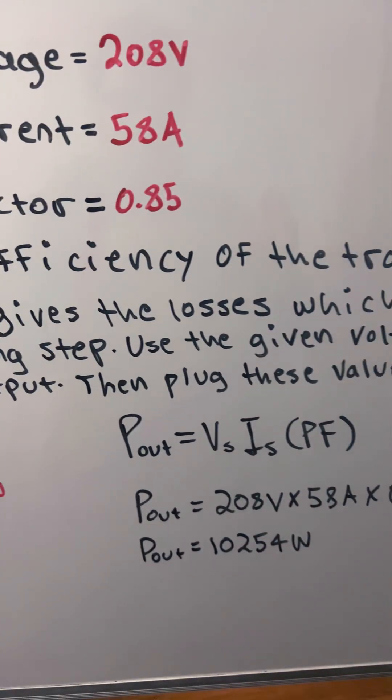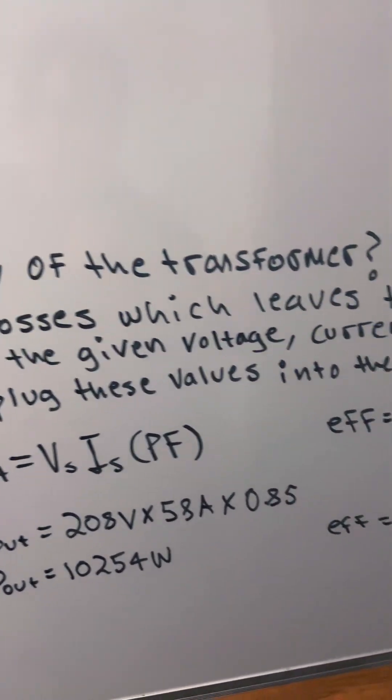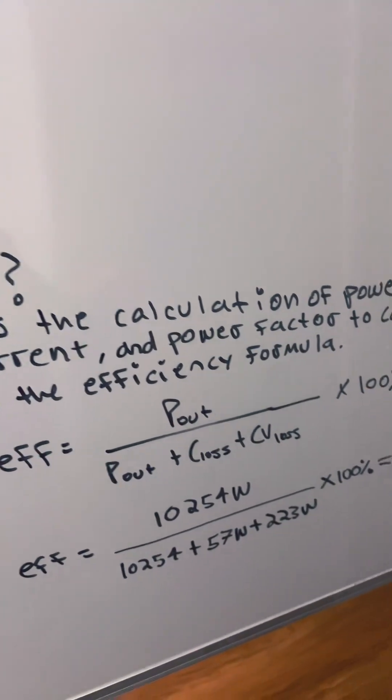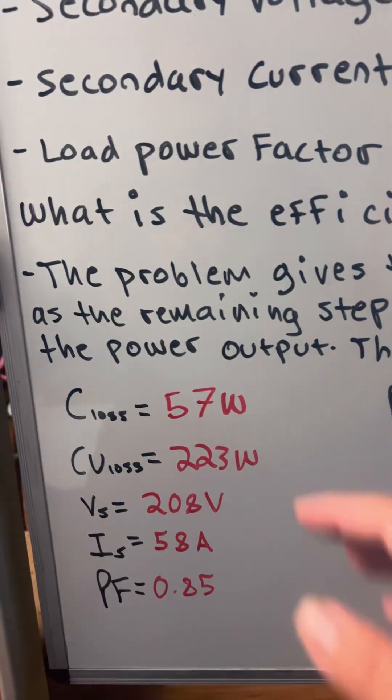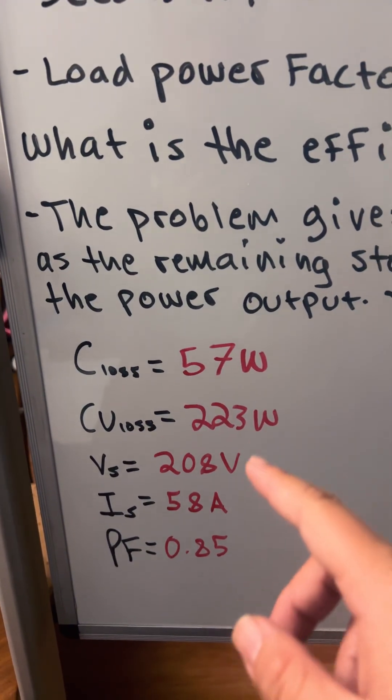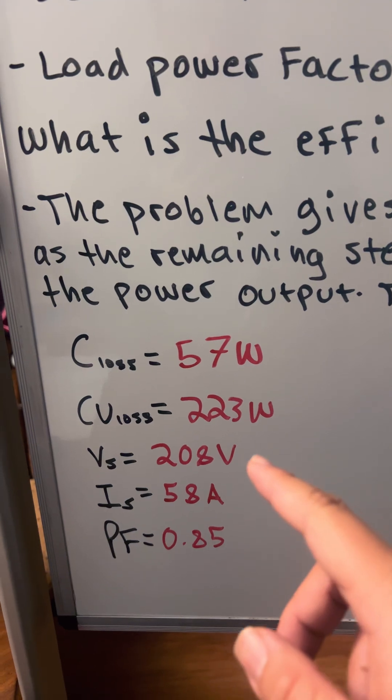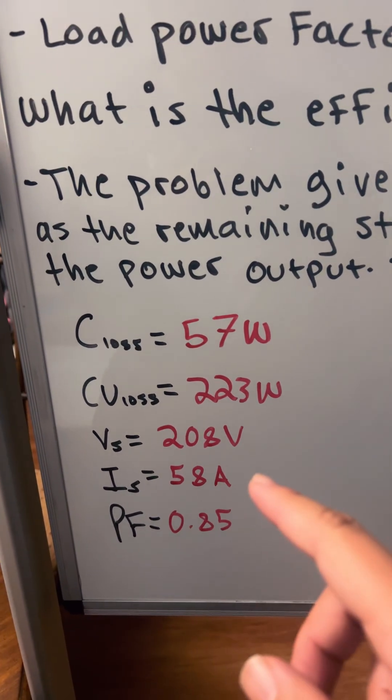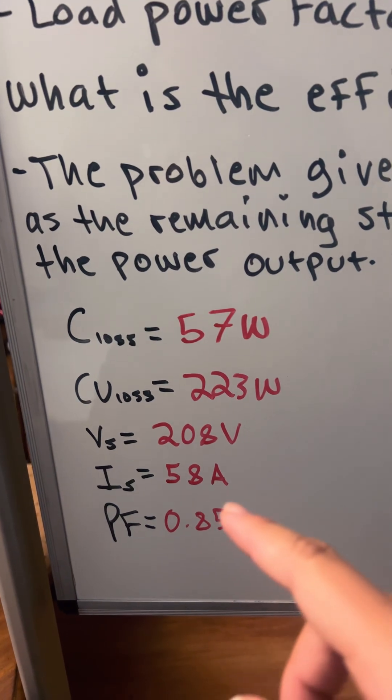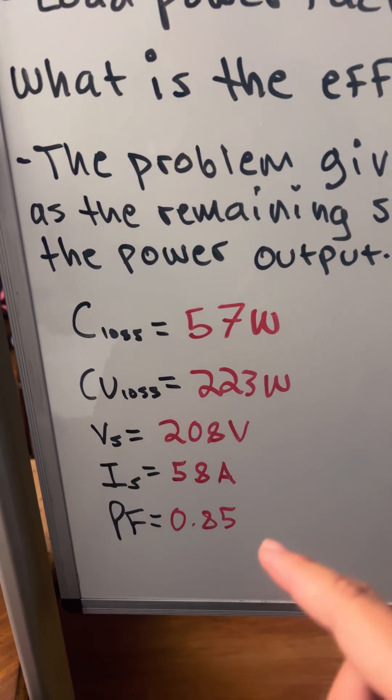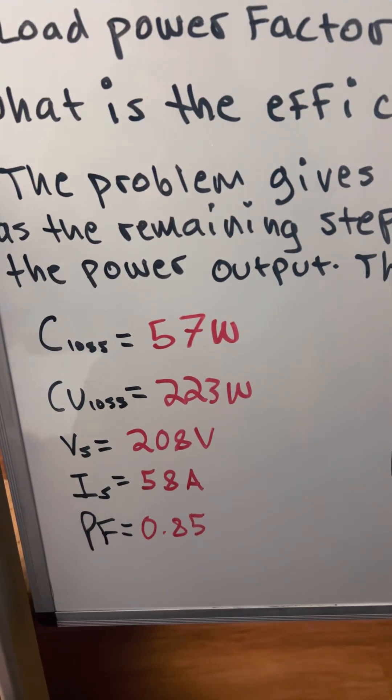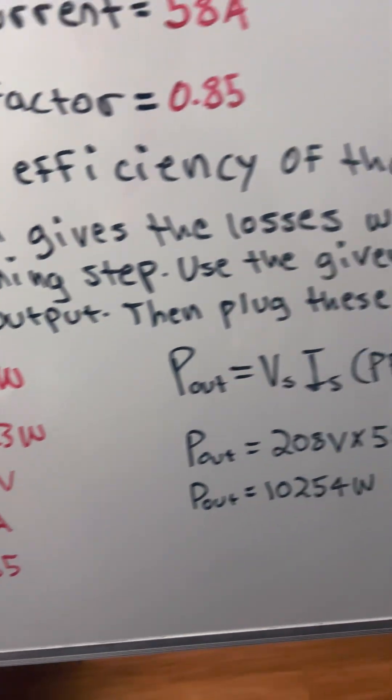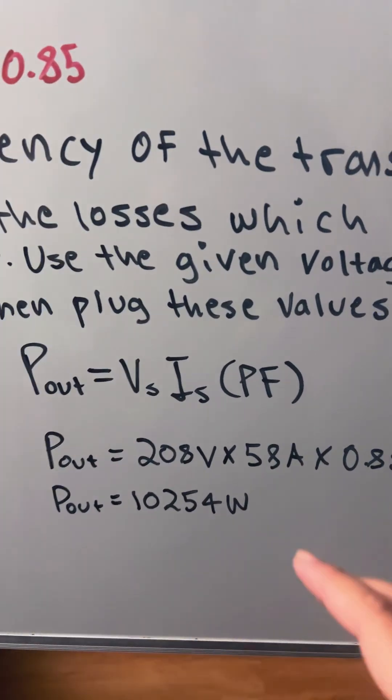Then we're going to plug these values into the efficiency formula. So we have core losses = 57W, copper losses = 223W, secondary voltage = 208V, secondary current = 58A, and power factor = 0.85. We're going to use the power formula first.